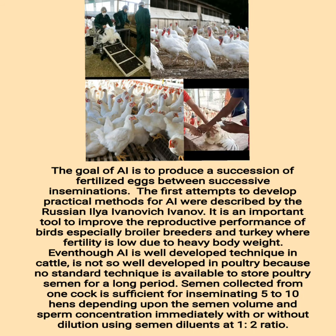The goal of AI is to produce a succession of fertilized eggs between successive inseminations. The first attempts to develop practical methods for AI were described by the Russian Ilya Ivanovich Ivanov. It is an important tool to improve the reproductive performance of birds, especially broiler breeders and turkey, where fertility is low due to heavy body weight.